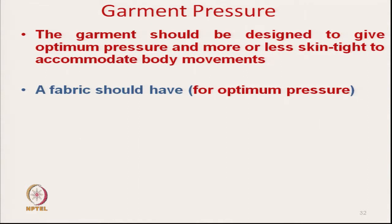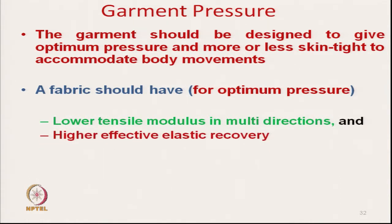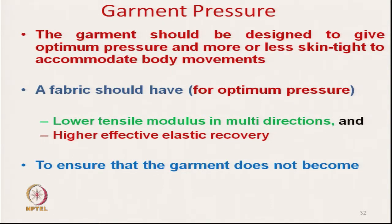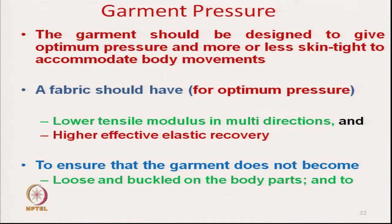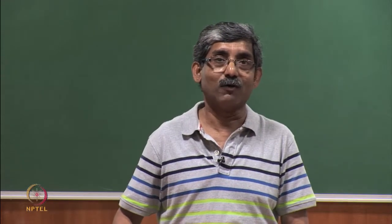For optimum pressure, the fabric should have certain characteristics. It should have lower tensile modulus in multi-directions, mainly in warp and weft directions. It should have higher effective elastic recovery so that there is no permanent deformation and no bagging effect. This ensures the garment does not become loose and buckled on the body part, and it accommodates body movement. These are the basic requirements of fabric to give proper pressure on our body and achieve comfort related to fit.